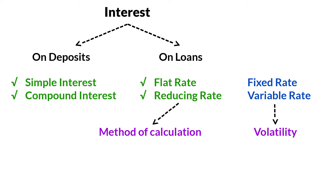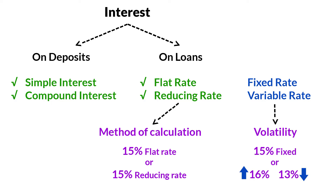For example, when someone borrows a loan at 15%, whether this 15% is a flat rate or a reducing rate will decide how the EMI on this loan is calculated. In the context of fixed and floating interest, it indicates whether the interest will remain at 15% throughout the loan tenor or will it increase or decrease in future.